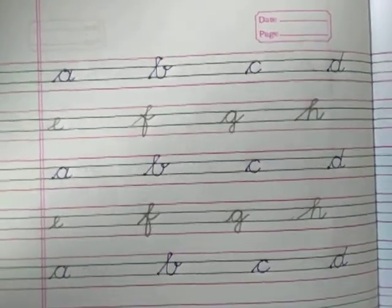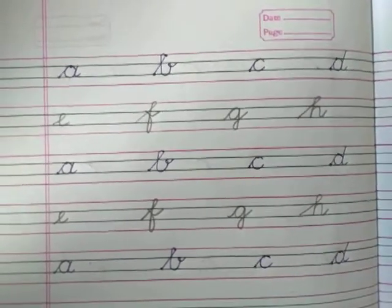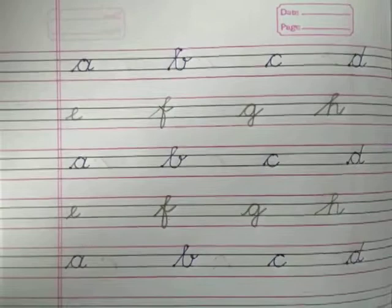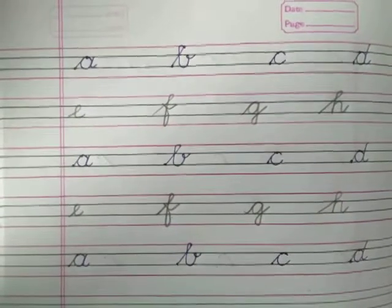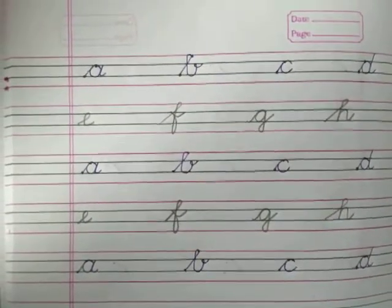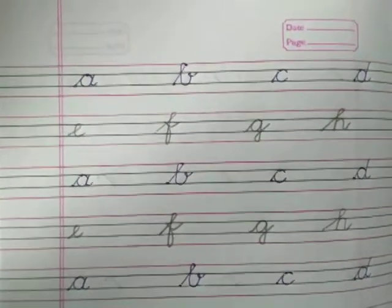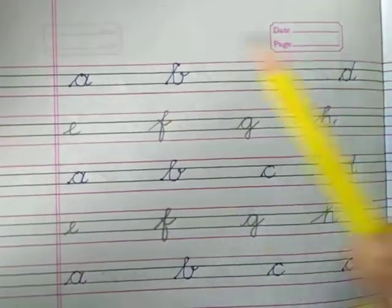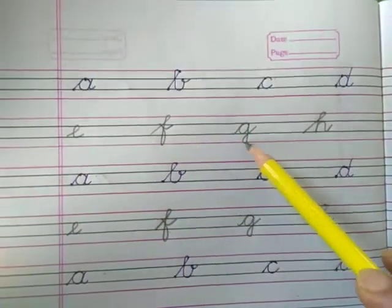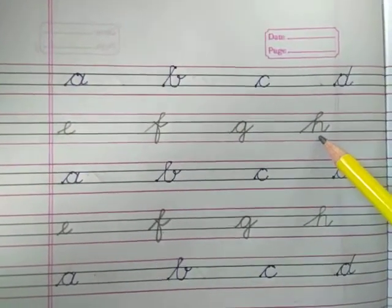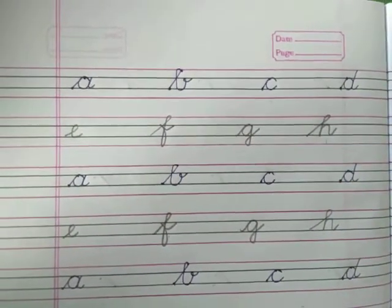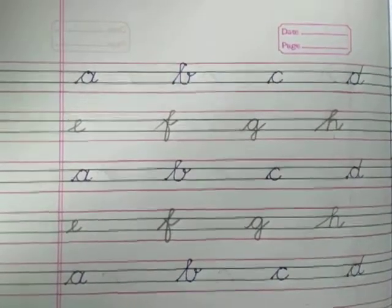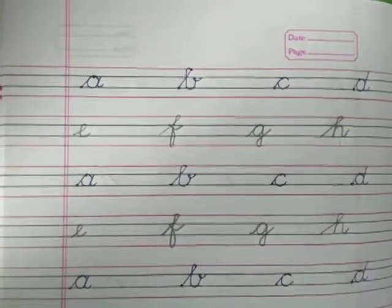Good morning KG2! How are you all? So KG2, this is your English class and in this class we will be doing the cursive writing practice. So till now, what you have learnt? You have learnt how to write A, B, C, D, E, F, G, H in cursive. And you have practiced the same. Now today we are going to write three-lettered words in cursive using the same letters.